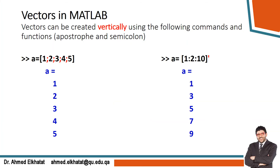Vectors can also be created vertically in MATLAB using different but similar commands. Instead of commas or spaces, you can use semicolons to make a vertical vector. You can also close the square bracket and add an apostrophe (transpose operator) to make it vertical. For example, 1:2:10 followed by an apostrophe gives the vertical vector: one, three, five, seven, nine.